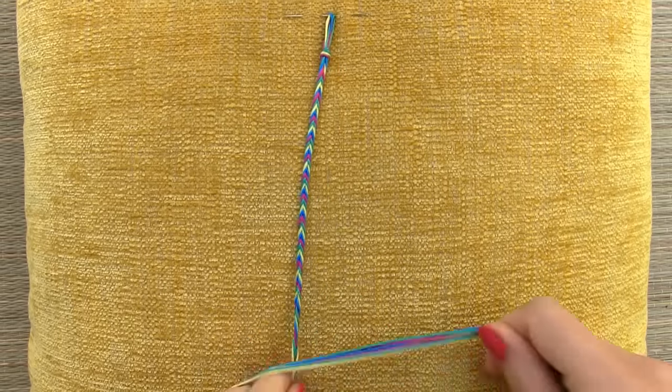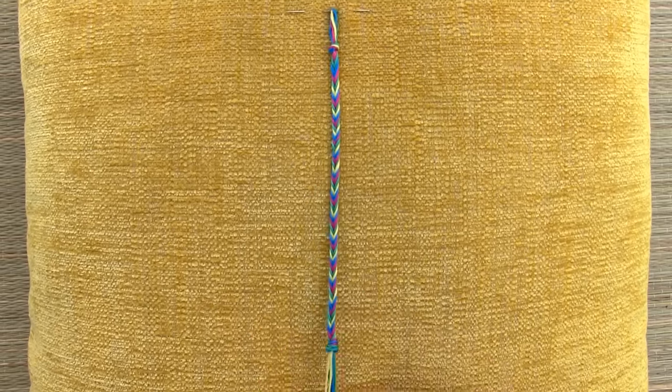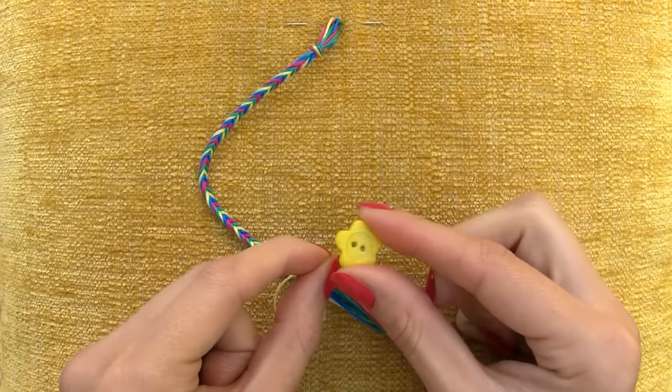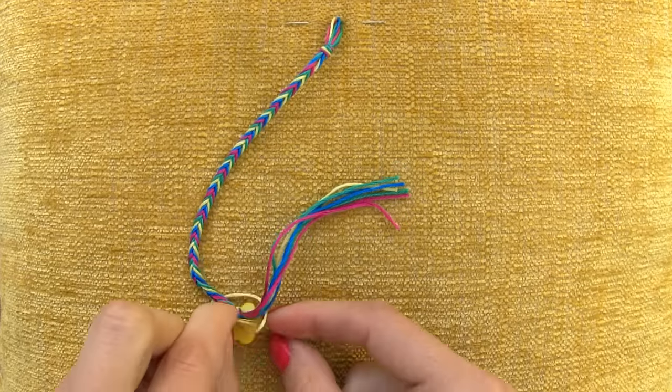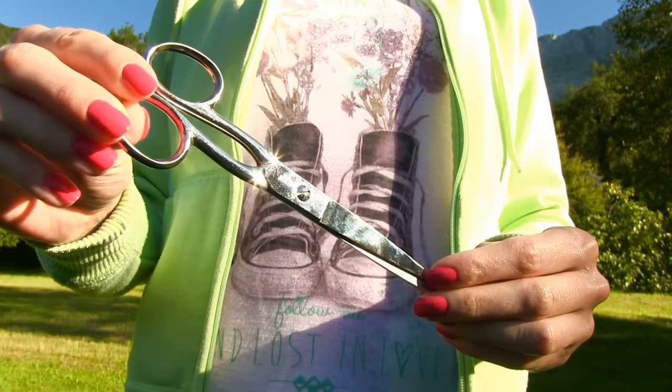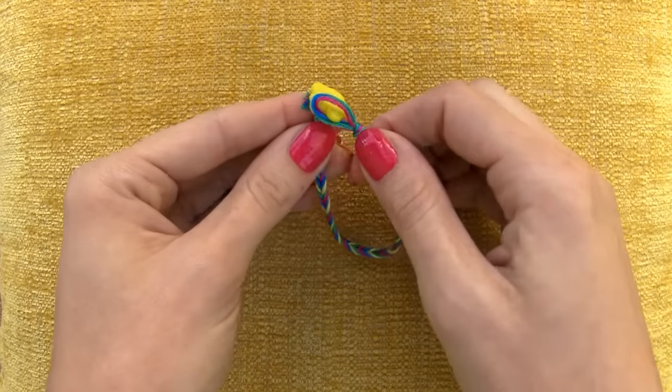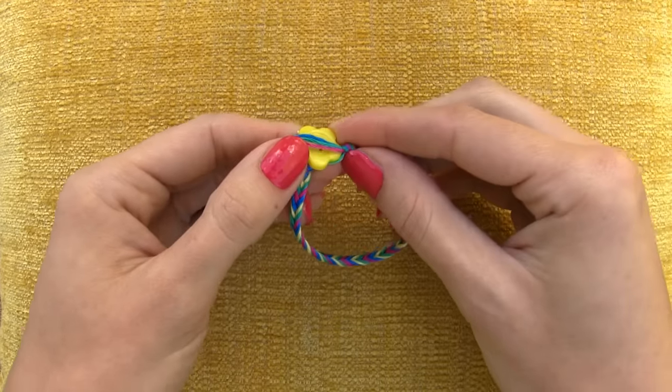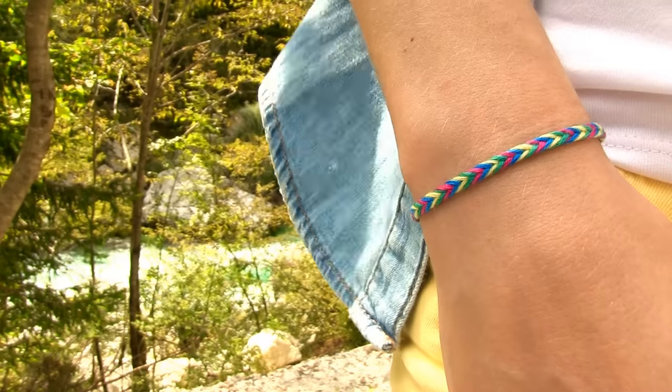Finish with a knot to secure the fishtail braid. Take a button, I have this beautiful yellow flower and thread it onto the chosen string. Slide the button close to the bracelet end and secure it in place by making two knots. Trim the excess string and voila our fishtail bracelet is all done! If you want to have a thicker bracelet you can use more than four pieces of string, if you would rather have a thinner bracelet go for only three string pieces.